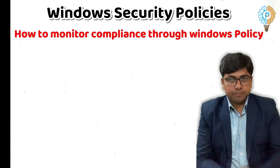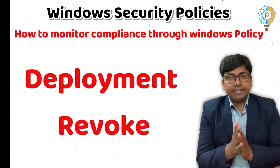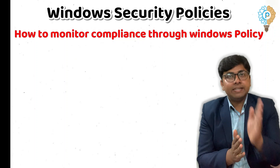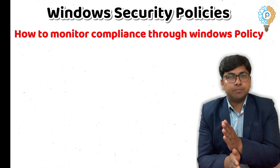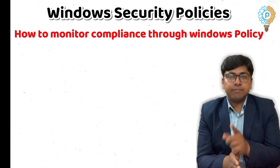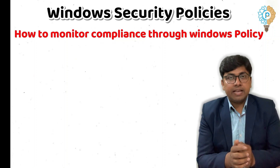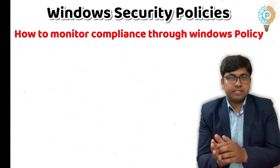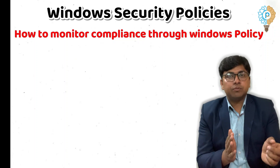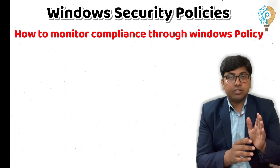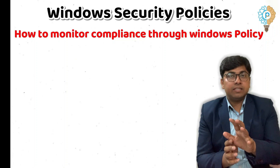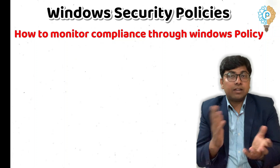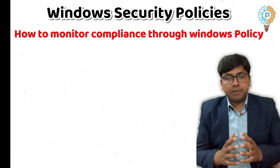Windows security policy deployment and revoking shall be part of your site SOP. Your site should have a proper format to maintain the deployment and revoking of GXP Windows policies, and that shall be approved by your quality unit. All revoking of GXP Windows policies shall come from QA with prior approval or prior intimation to the quality department, because if any user revokes GXP Windows policies without QA knowledge or approval, there may be a chance of unauthorized activity.